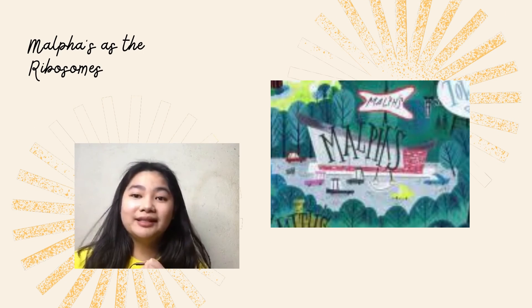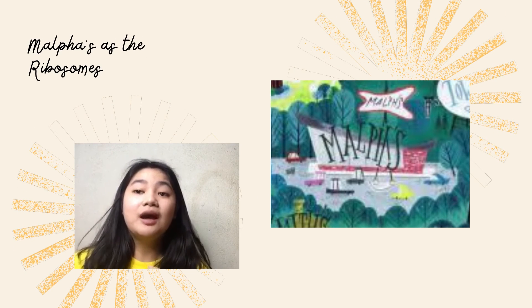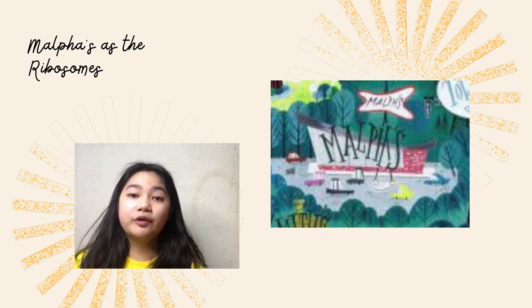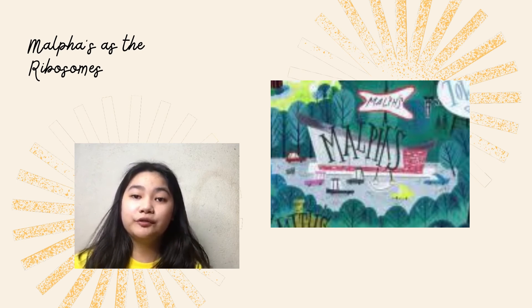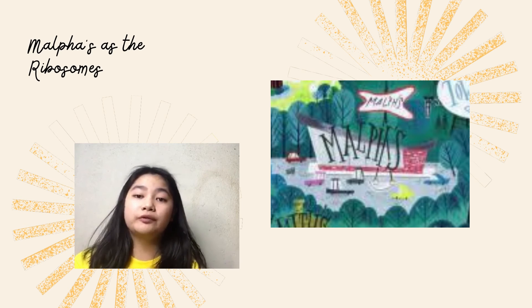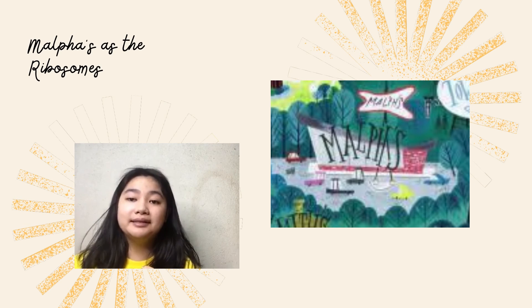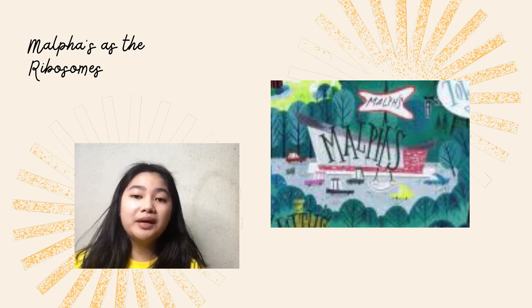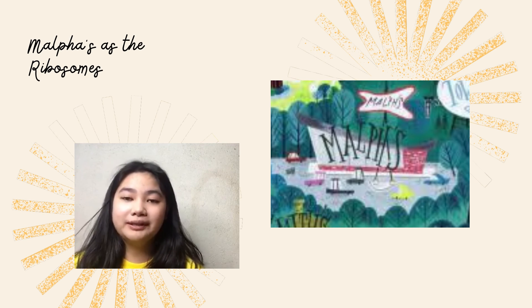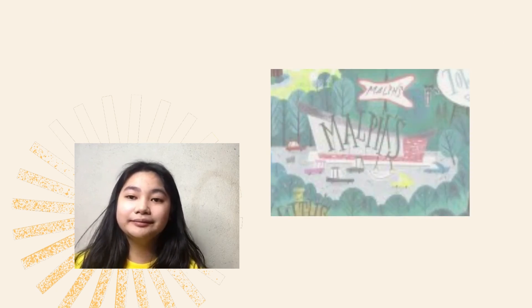And lastly, the Malfa's store. This represents the ribosomes. Ribosomes are involved in the production of proteins. Malfa's is where the professor buys necessities for the girls, which makes Malfa's involved in protein synthesis.